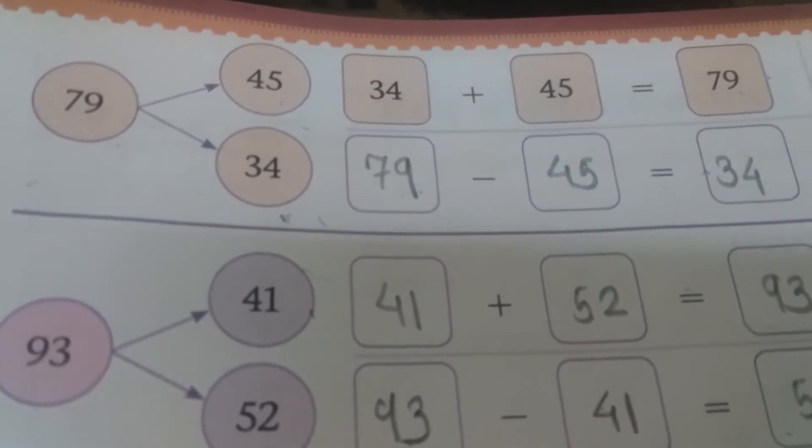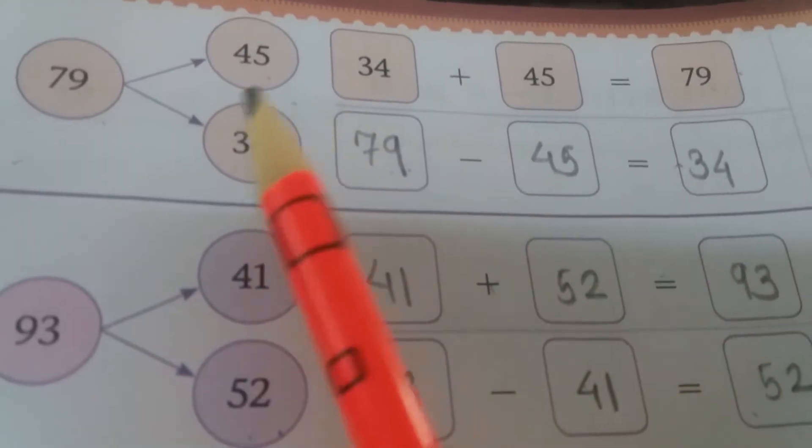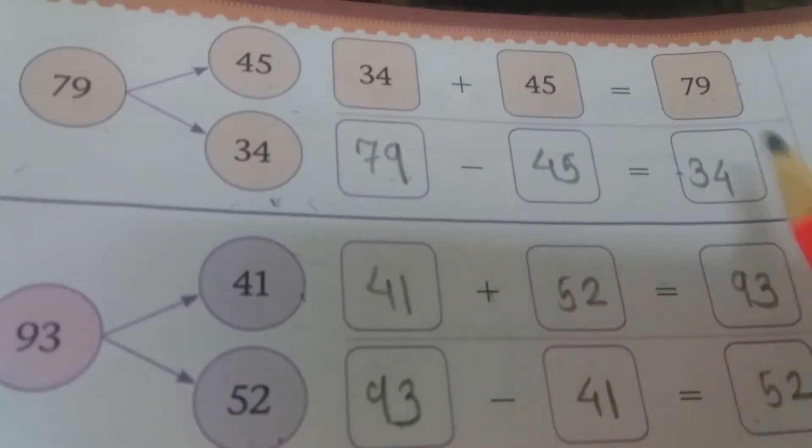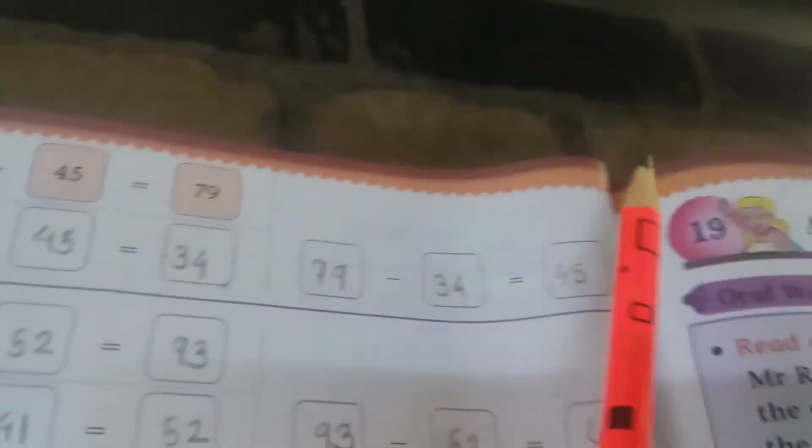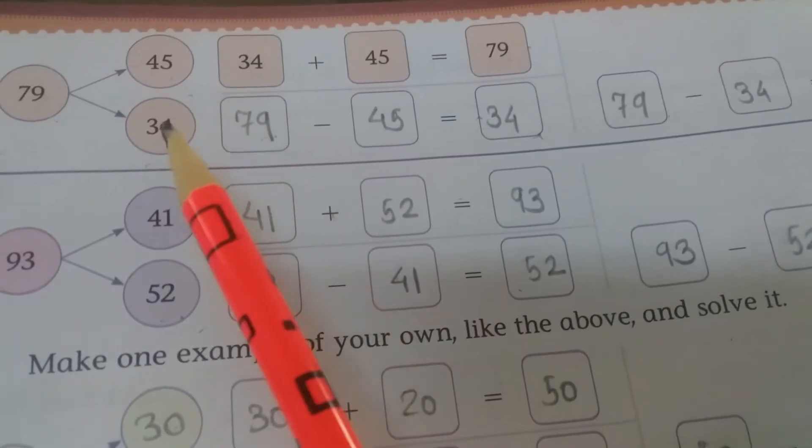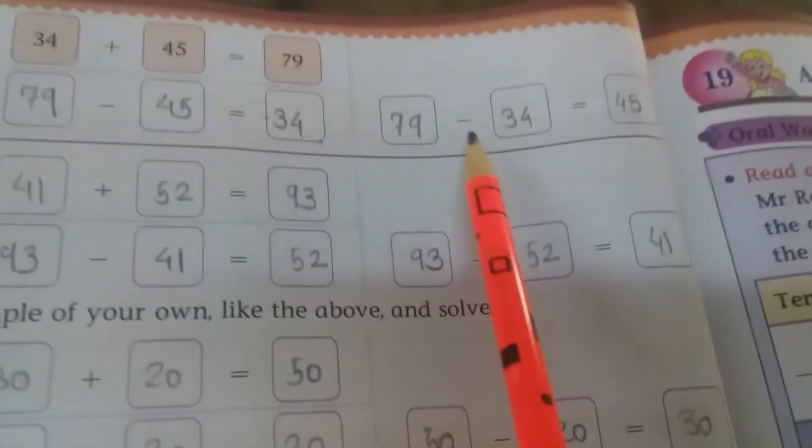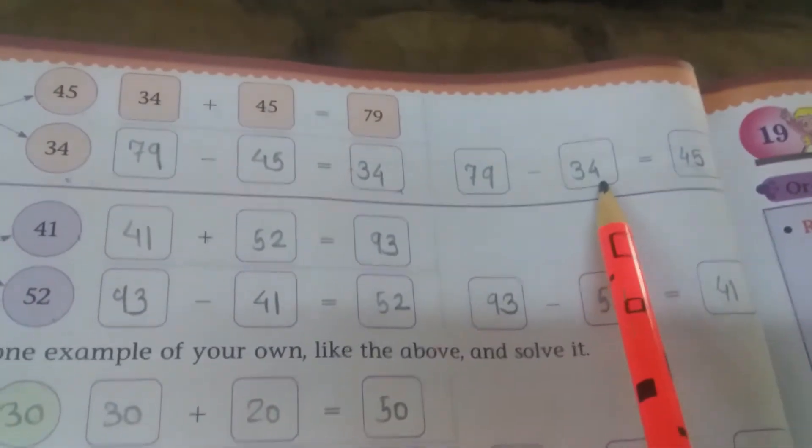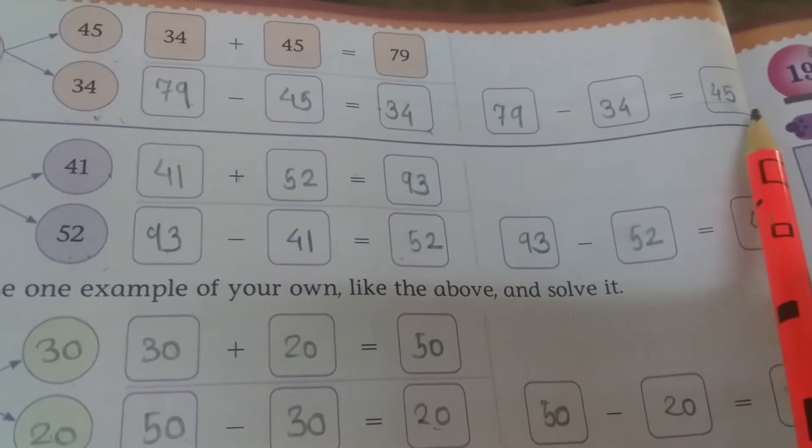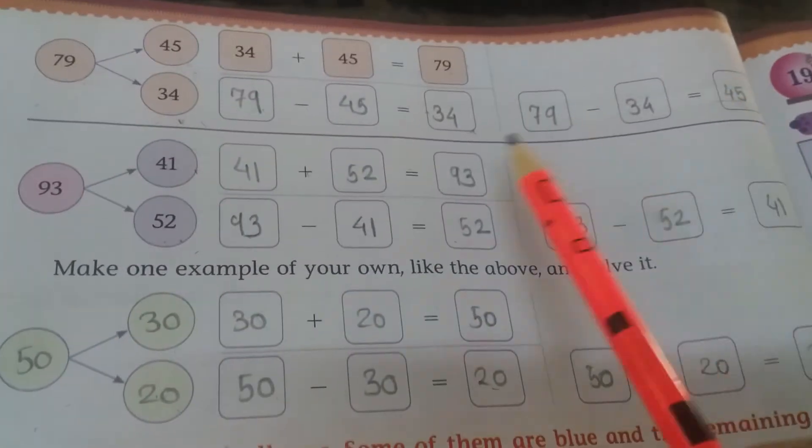Now make the subtraction example, 79 minus 45, here answer will come 34. Now like that way children, make another example. 79, 79 is the bigger number, 79 minus 34, answer will become 45. 79 minus 34, answer will come here 45. Like that way, now children, see the example properly.